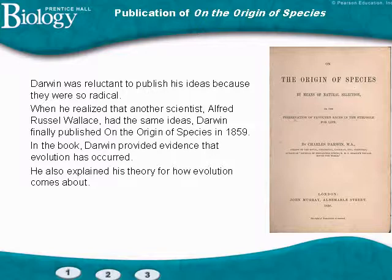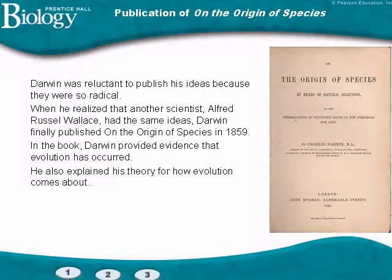He knew that another scientist, Alfred Russell Wallace, had the same ideas and was starting to publish them. So Darwin knew he had to beat him to it and started publishing his ideas in The Origin of Species. He and Wallace were actually very cordial colleagues who corresponded and shared ideas with each other, really helping each other out.